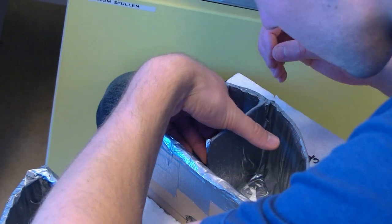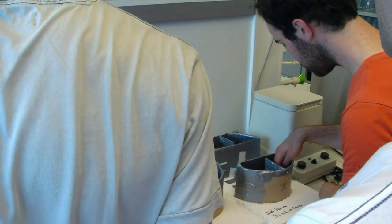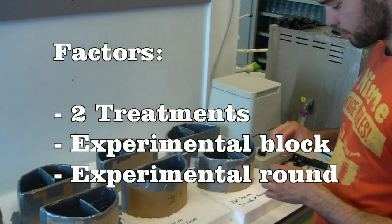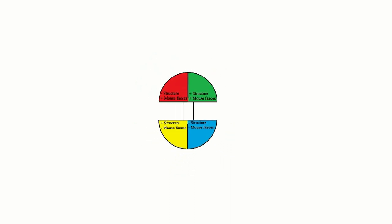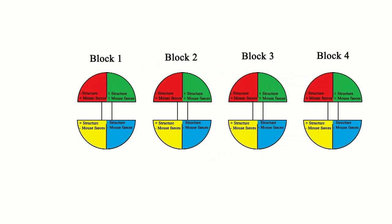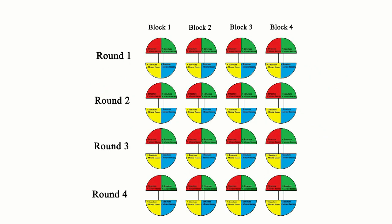The manipulative study examined whether structure and mouse feces affect tick movement. The study design contains three factors: treatment, experimental blocks, and experimental rounds. Treatment consists of four levels — compartments of no structure with mouse feces, structure with mouse feces, structure without mouse feces, and no structure and no mouse feces (the control). The four boxes were used as a blocking factor, as the boxes might slightly differ from each other. In total, there were four experimental rounds, resulting in 16 replicates — four blocks times four experimental rounds.